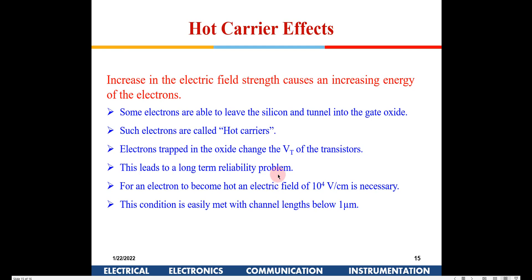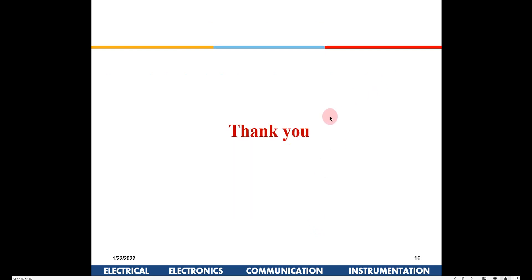Finally, hot carrier effects occur when a high electric field causes electrons from the channel region to gain enough energy to punch through the gate oxide and become trapped in it. Once trapped, these charges permanently alter the transistor's V_T — similar to the oxide charges we saw in the V_T equation in the last class. Hot carrier degradation is another reliability problem associated with short channel devices. This concludes today's class.